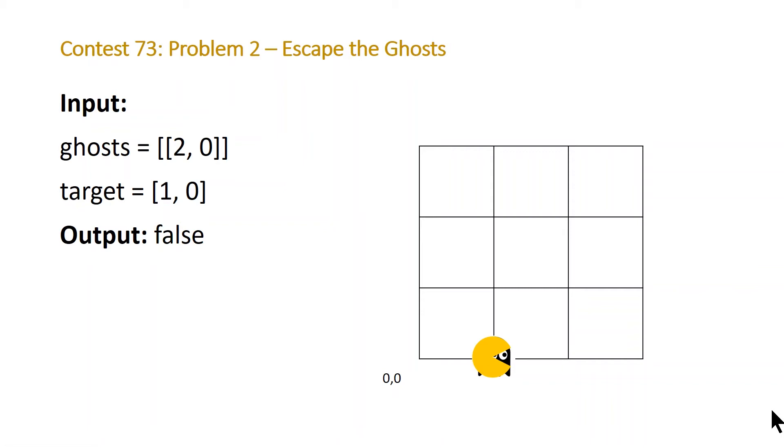So you might think that in order to solve this problem, you have to generate every single possible combination of paths from the ghost and Pac-Man to the target and see if at any point the ghost is able to catch them. But there's an easier way to solve this problem. And that's by just noting that you don't really need to worry about the paths. You just need to worry about how many moves does it take for both Pac-Man and the ghosts to get to the target.